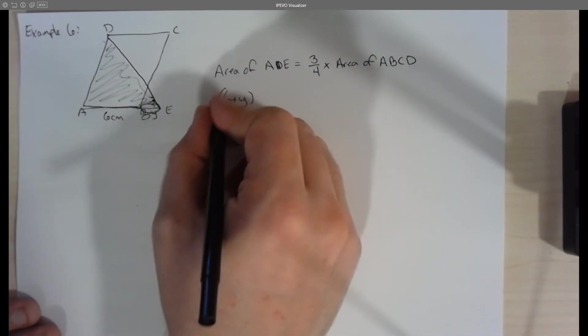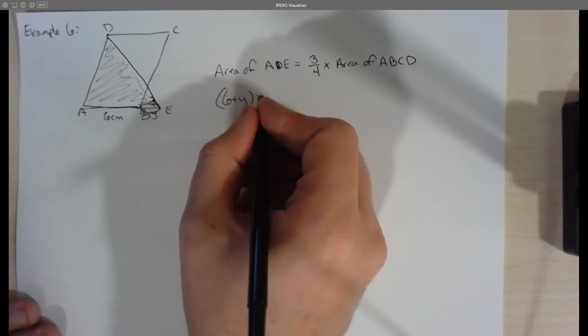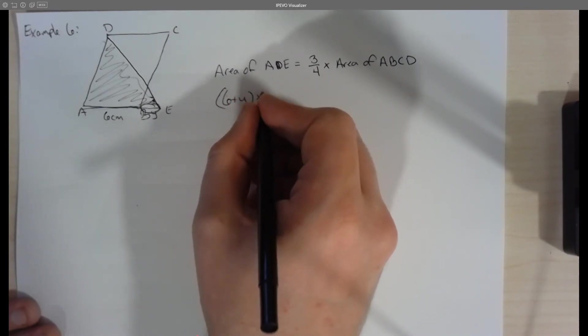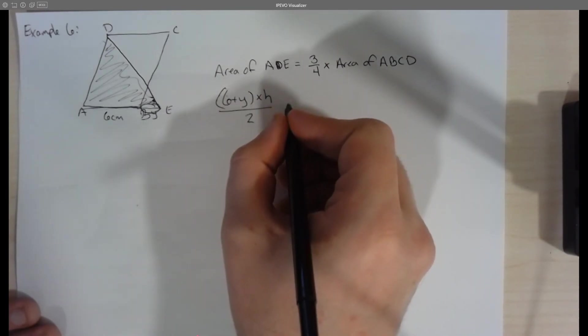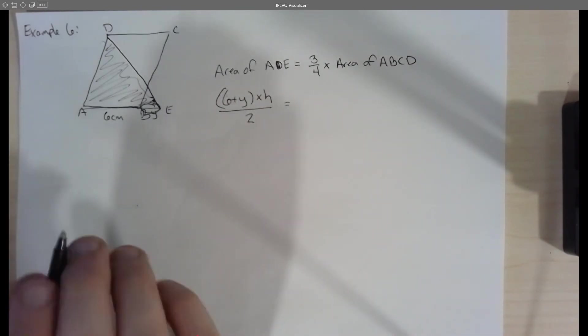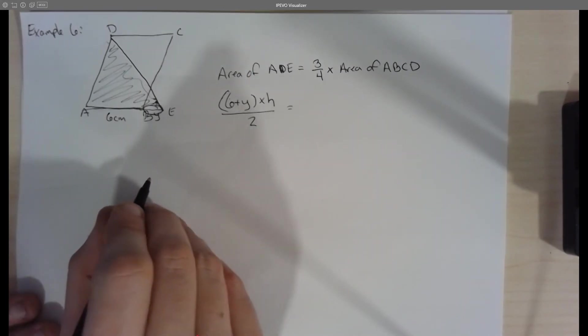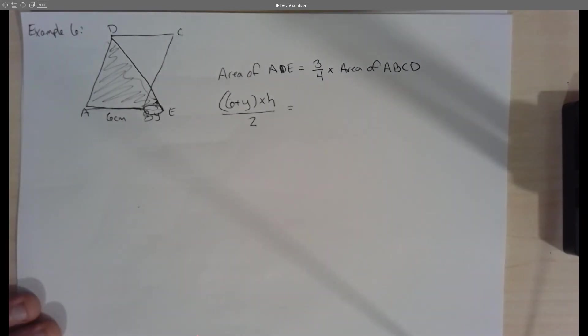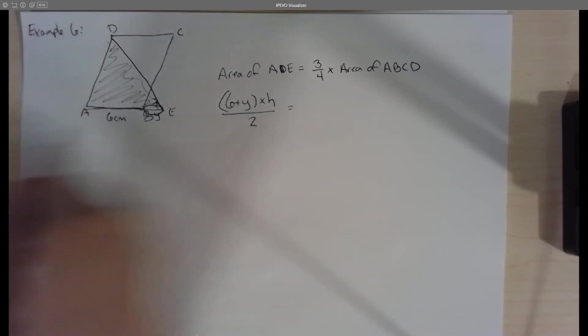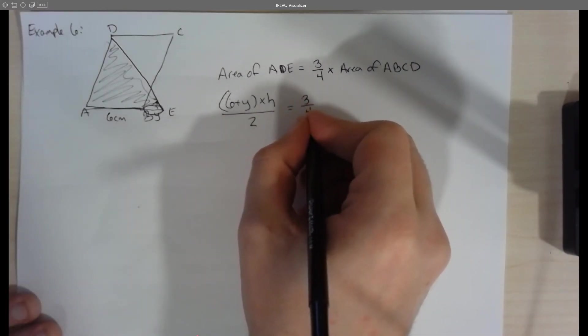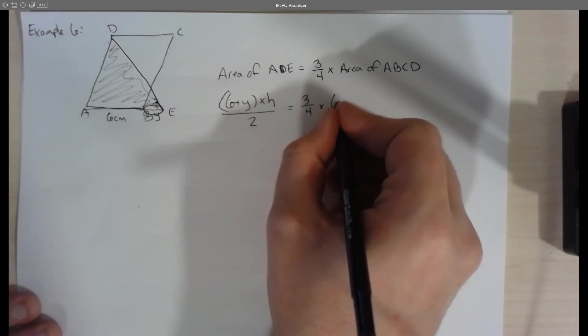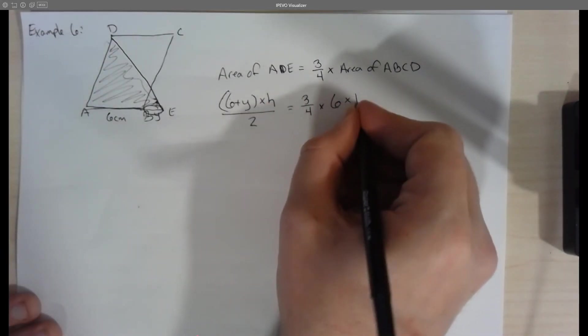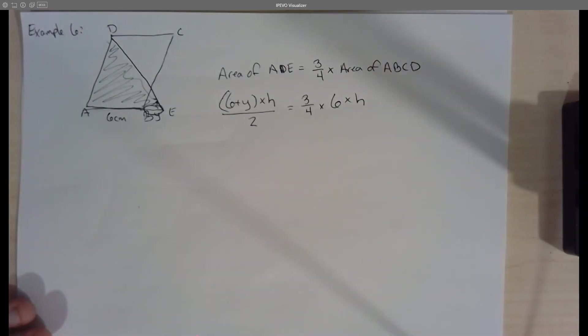...that's our base times our height, which we also don't know, and then divided by two, that's our triangle formula. Stay with me. It is a little bit tricky, but stay with me here. Equals now we have the other part of the formula, which is three quarters times the parallelogram formula, which is base or six times some sort of height, which we don't know as well.